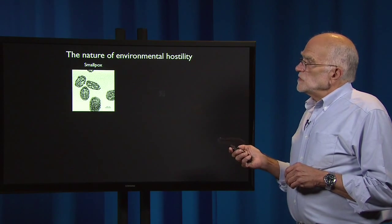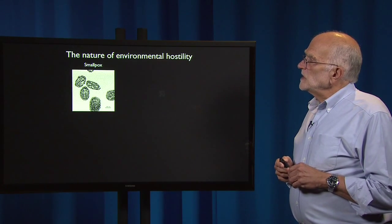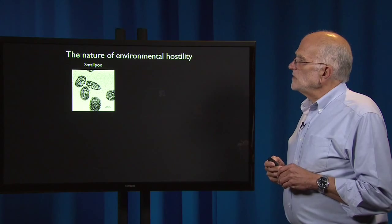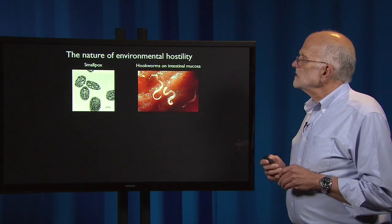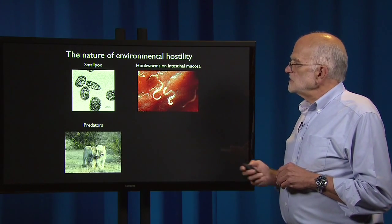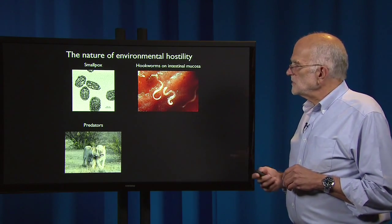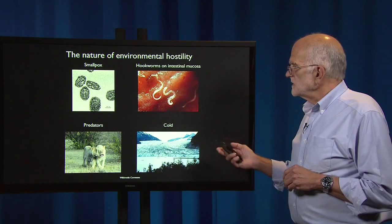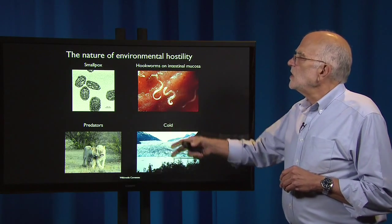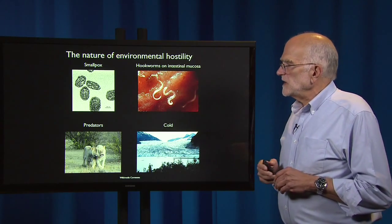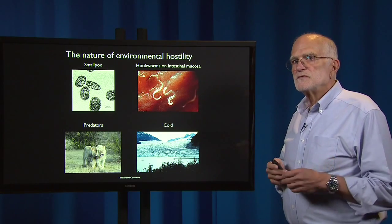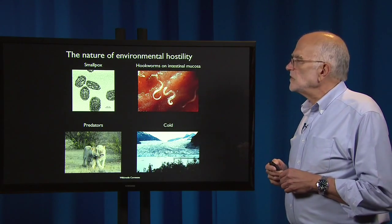Here, for example, is one kind of environmental hostility: the smallpox virus. Here are hookworms on intestinal mucosae, a predator, and cold. Those are all different types of factors against which certain kinds of defense have evolved.